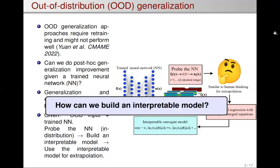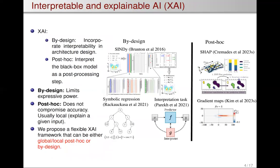How do we build an interpretable model? This brings us to the field of explainable AI, XAI. We can broadly categorize XAI into two classes. We have by-design approaches, which incorporate interpretability into their architecture design from the get-go. The second class are post-hoc approaches, where a black-box model is interpreted as a post-processing step.